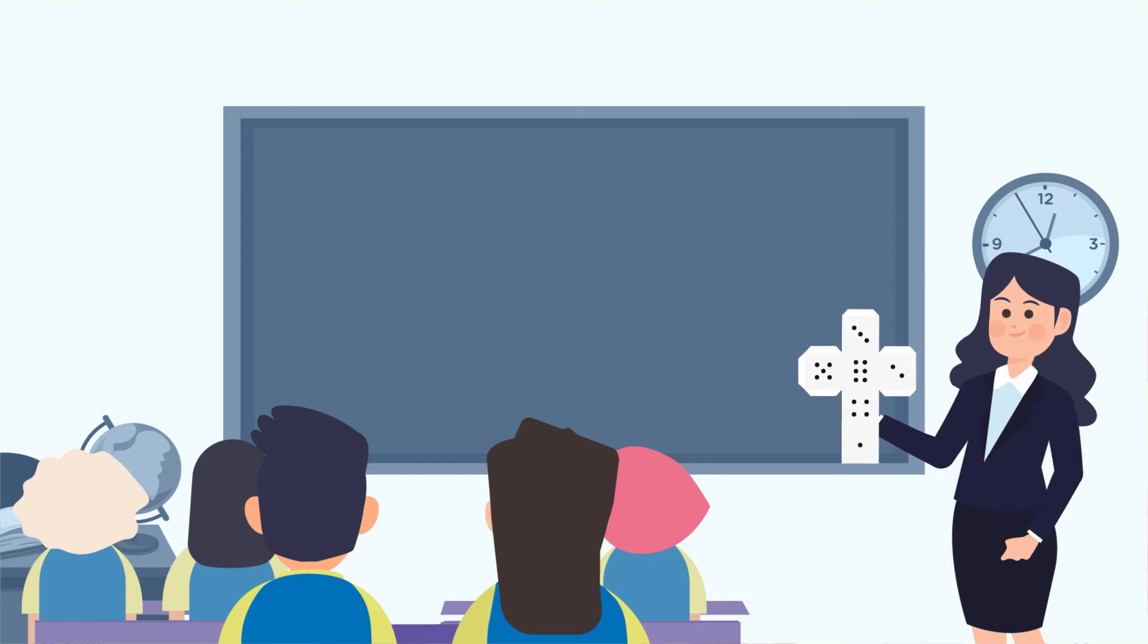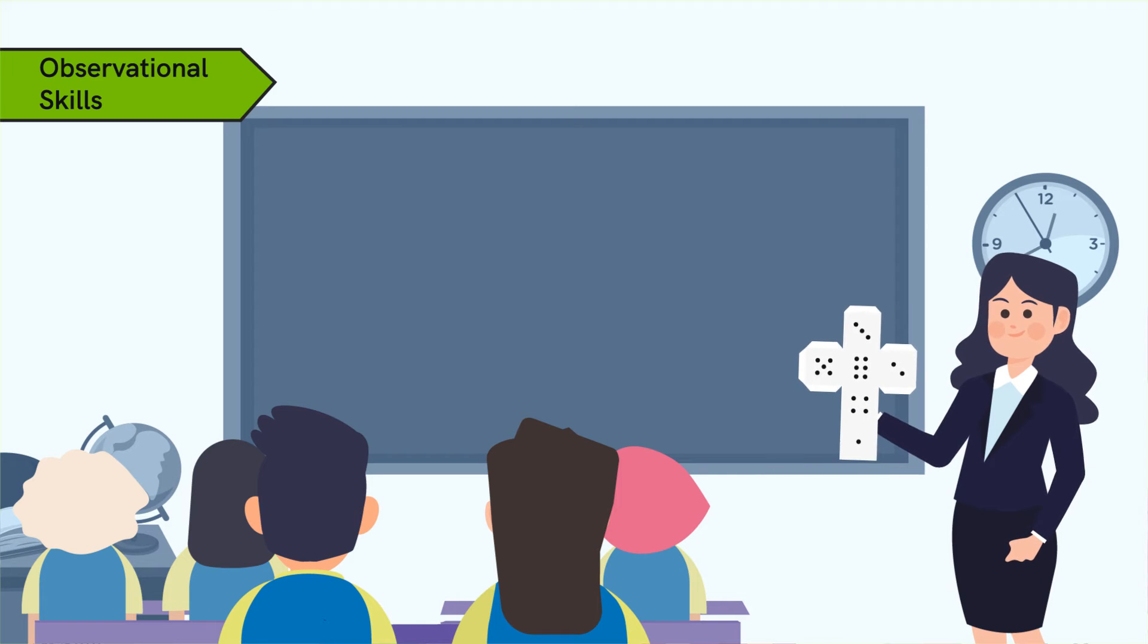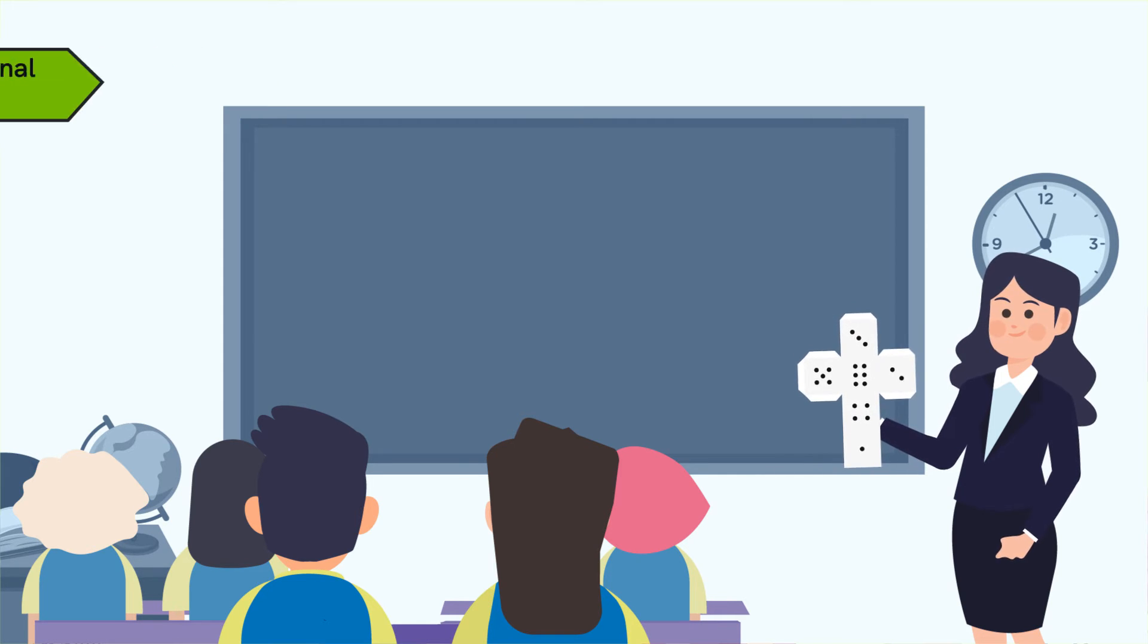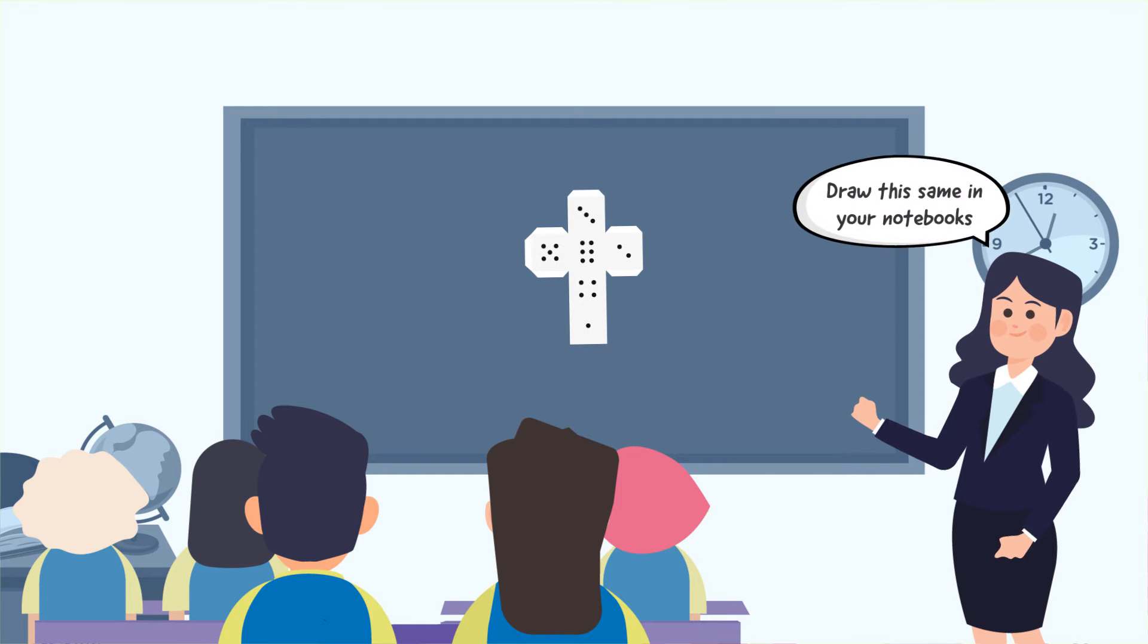Begin by opening the paper dais in front of the students to recapitulate the net of a cube. This will enhance students' observational skills and they will be able to recapitulate the joints and faces of the cube. Display it to the class and ask them to draw the same in their notebooks.